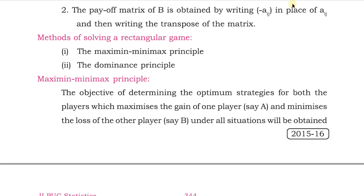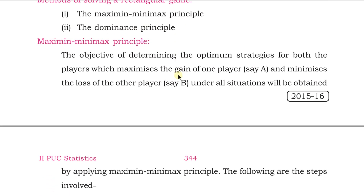Hello students, welcome to the statistics class. Previously we discussed some important definitions regarding game theory — its introduction, what is a competitive situation, and some properties of a competitive situation called a game. Now in this video we shall look at some methods of solving a game. There are two methods of solving a rectangular game: the first is the maximin-minimax principle, and the second is the dominance principle.